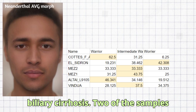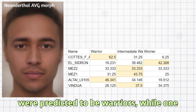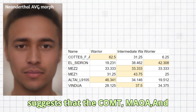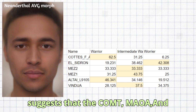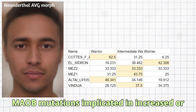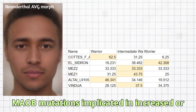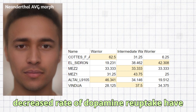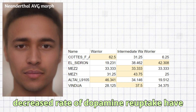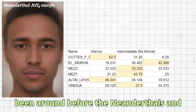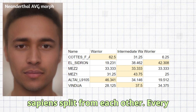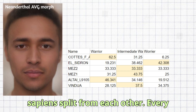Two of the samples were predicted to be warriors while one was predicted to be a worrier, which suggests that the COMT, MAOA, and MAOB mutations implicated in increased or decreased rates of dopamine reuptake have been around before the Neanderthal-sapiens split.